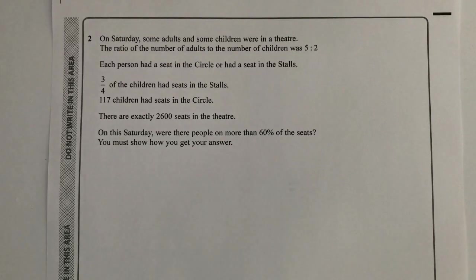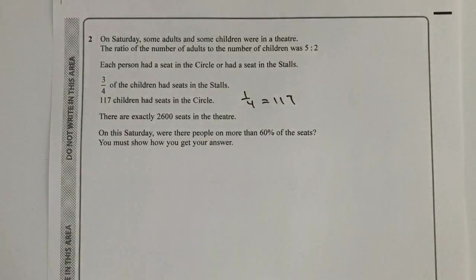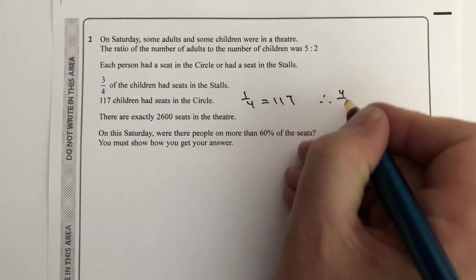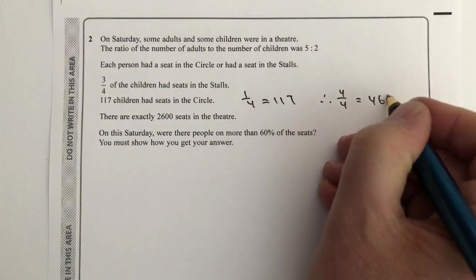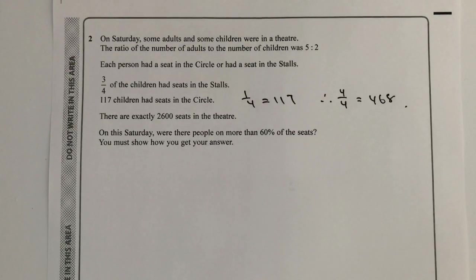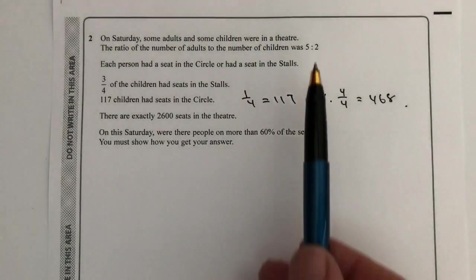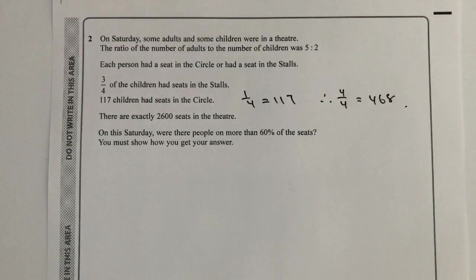So what we're actually saying is that one quarter equals 117. If that is the case, then four quarters is going to equal 468. So we've worked out the number of children actually in the theatre. The ratio of adults to children is five to two, so this 468 children represents those two shares.